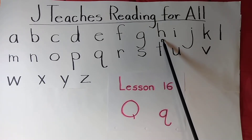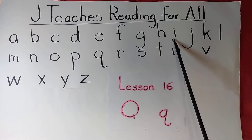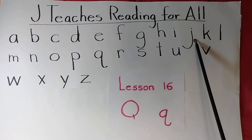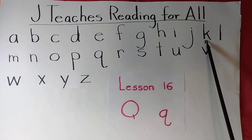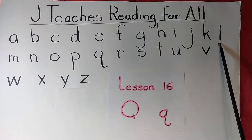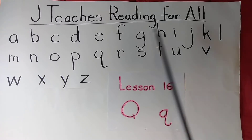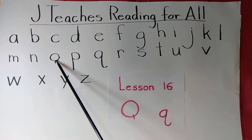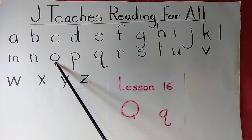H — H, house. I — I, Indian. J — J, jet. K — K, kite. L — L, lamp. M — M, mountain. O has two sounds — O, octopus; O, ostrich.